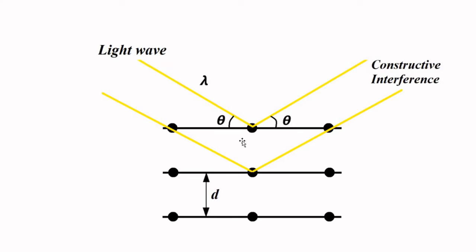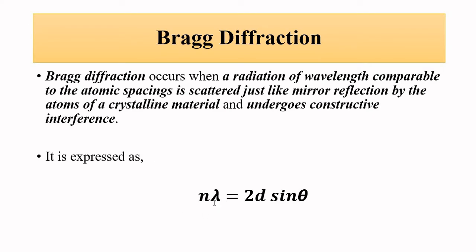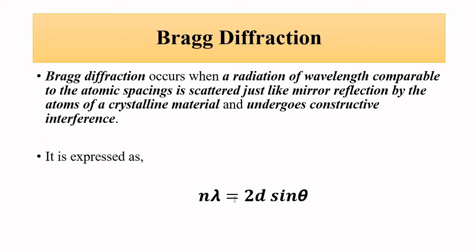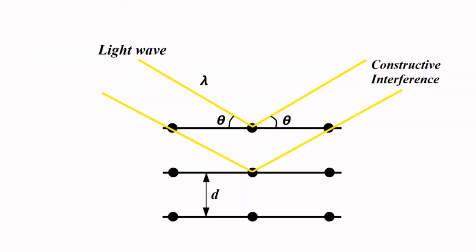When the light wave strikes an atom it gets diffracted or scattered by the same angle as the angle of incidence. When light gets diffracted through multiple layers of such atoms, those diffracted beams superimpose to produce constructive interference — that is the whole principle of Bragg diffraction. It is given by n·λ = 2d·sinθ, where n is the order of diffraction, λ is the wavelength of the light wave, d is the diffraction grating constant, and θ is the angle of incidence equal to the angle of diffraction.